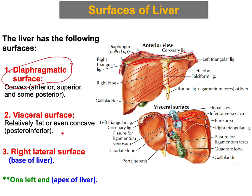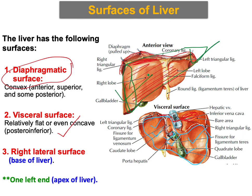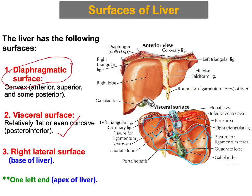The second important surface is the visceral surface, which is against different structures and organs in the abdomen, usually posterior-inferiorly. This is the inferior or posterior-inferior surface of the liver. The third surface is located laterally and is called the right lateral surface, or the base of the liver if you consider it like a triangle — here is the base and here is the apex.